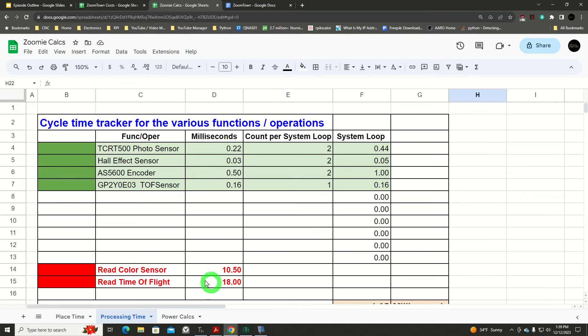So we took a different path, looked for other sensors, alternative sensors that can perform the same function, but take less time to read and process the data. Now we've chosen the TCRT 5000 photo reflective sensor that takes 0.22 milliseconds to read and process. My Hall effect sensors that I've picked out are 0.03 milliseconds. That is very, very fast. The AS5600 encoders take a half a millisecond or 0.5 milliseconds. And then the GP2Y0E03 time of flight sharp sensor is taking 0.16 milliseconds to read and process the data.